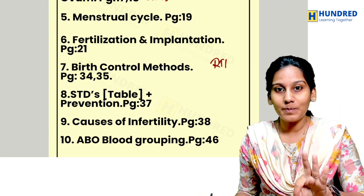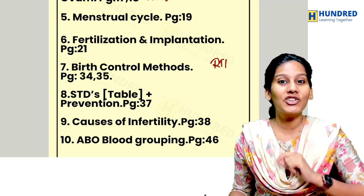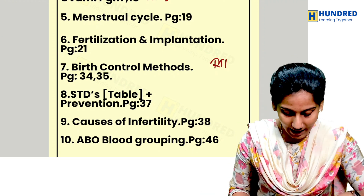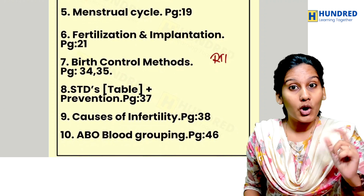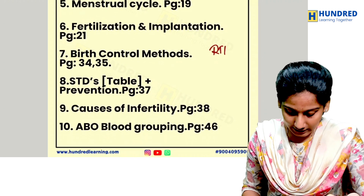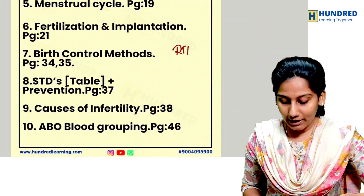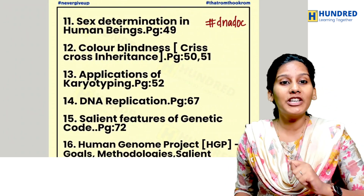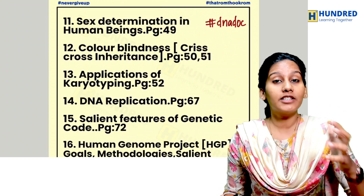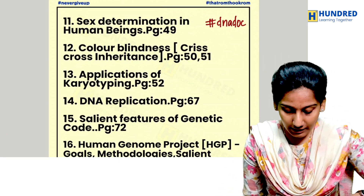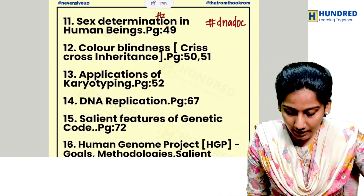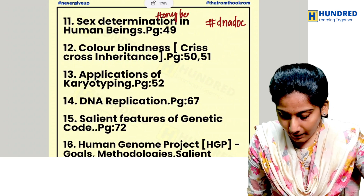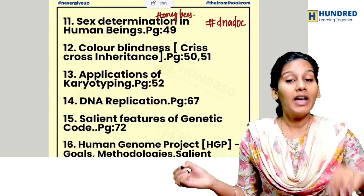Other important topics include causes of infertility, ABO blood grouping, sex determination in honeybees, and sex determination in human beings. These are all important for genetics-related questions.